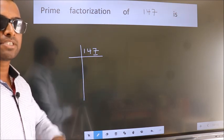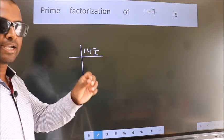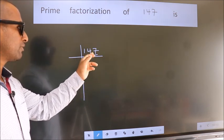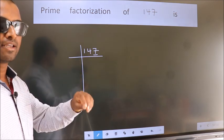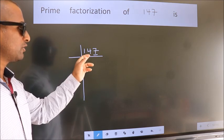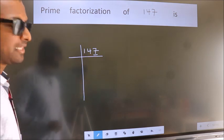To check divisibility by 3, we should add the digits. 1 plus 4 plus 7. We get 12. Is 12 divisible by 3? Yes. So this number is also divisible by 3.